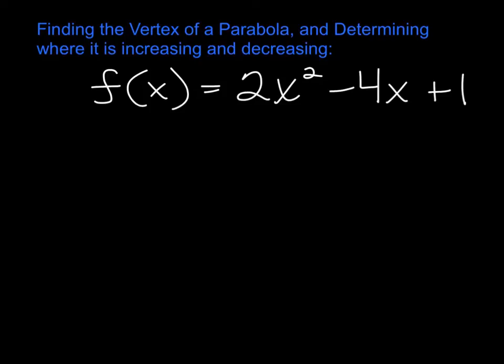So when I'm trying to find the vertex when it's in this form, the x part of the vertex, I always write x sub v, and the reason I write sub v is to show that I'm finding the x part of the vertex, not necessarily the x-intercept.